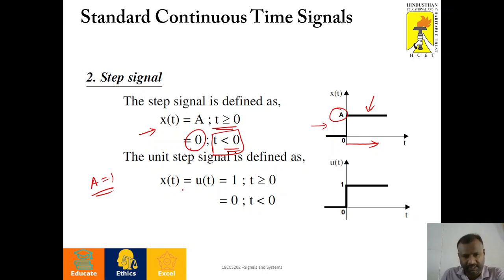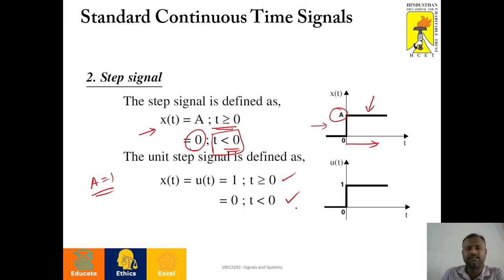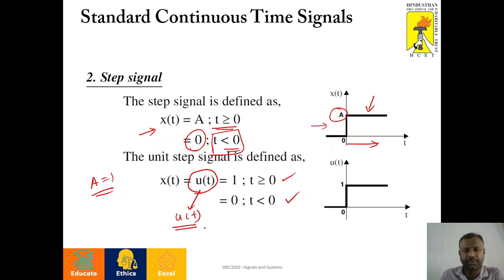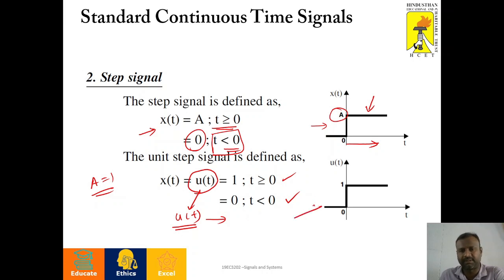Hence, unit step signal is equal to 1 when t is greater than or equal to zero, and it is zero when t is less than zero. This unit step signal is denoted as u of t. So, wherever we find u of t, that represents the unit step signal. This is the graphical form of the step signal.